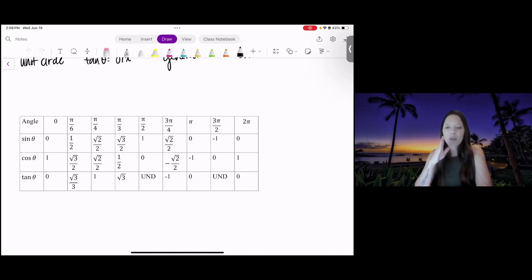At 90 degrees, pi over 2, sine is 1, cosine is 0. At pi, cosine is negative 1 and sine is 0. And at 3 pi over 2, sine is negative 1 and cosine is 0.